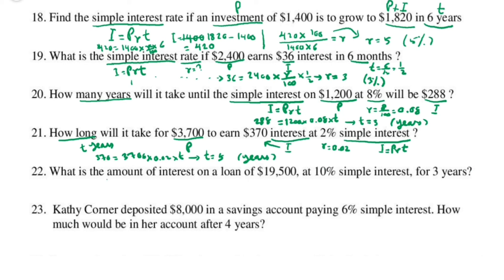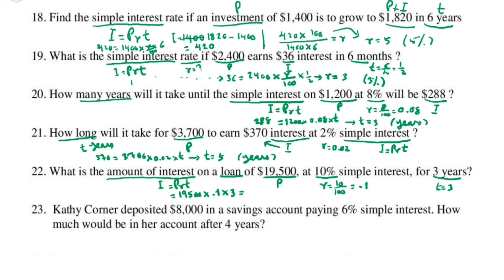Problem 22: what is the amount of interest I on a loan? This is the principal — 10% simple interest rate, so r is 10 over 100, which is 0.1. T is 3 years. I equals prt: 19,500 times 0.1 times 3 equals 5,850. So I is $5,850.